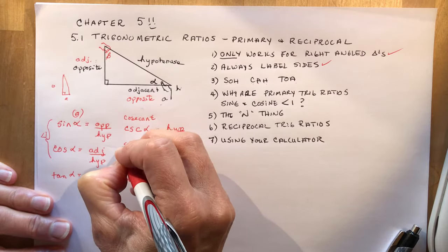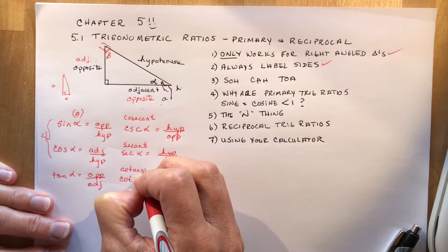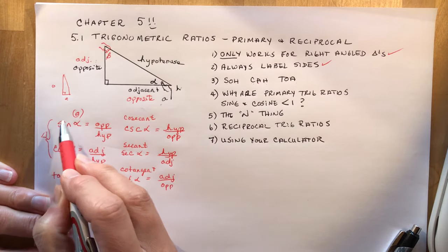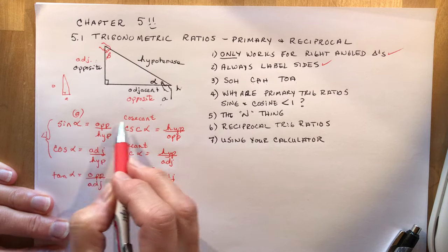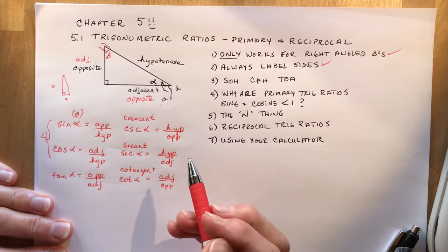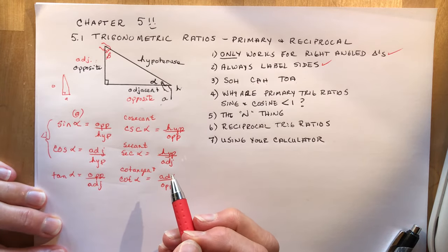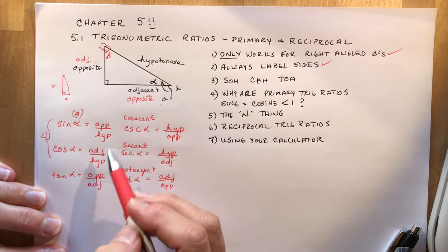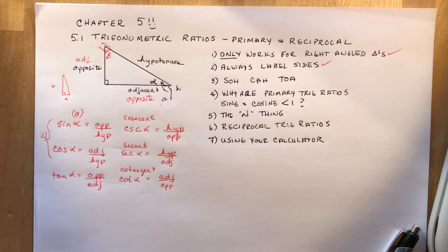So this is secant and cotangent. Now you might notice that sine goes to cosecant, cosine goes to secant, so they switched letters. Not sure why they did that. Why didn't they say sine and secant? I don't know, ask the Greeks, they're not around to defend their reasoning. So those are your reciprocal trig ratios, and I'm going to give you some examples on how do you solve these things because you get lots of that practice in your homework.